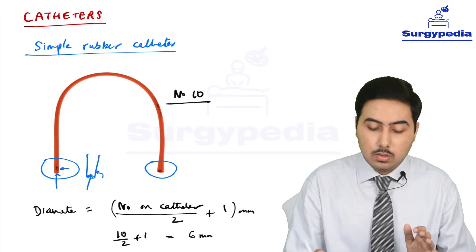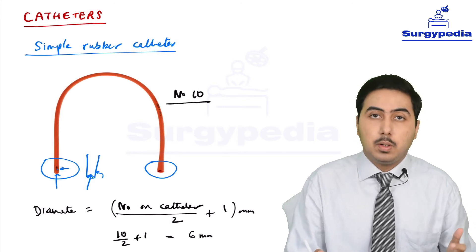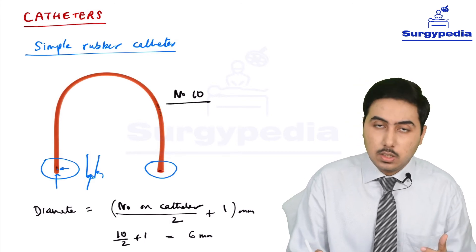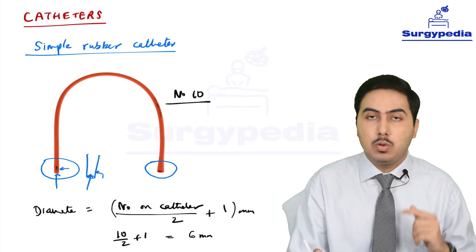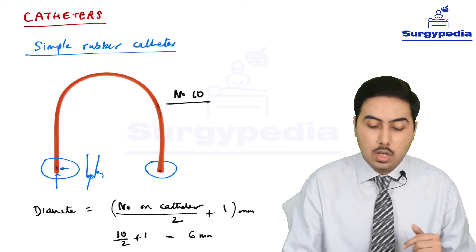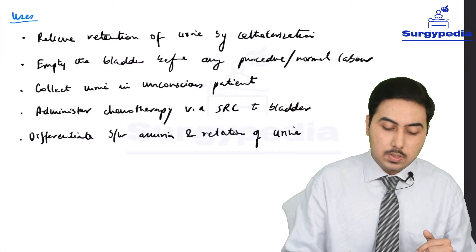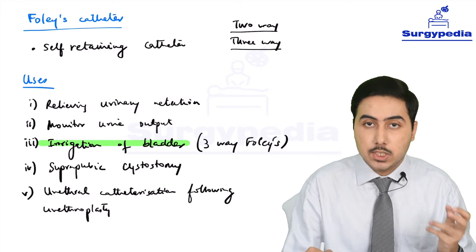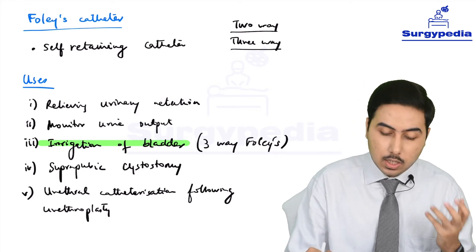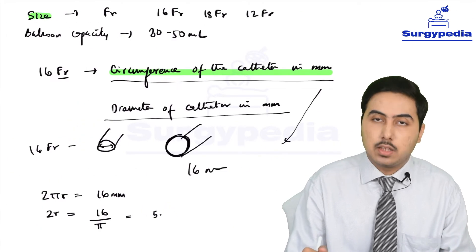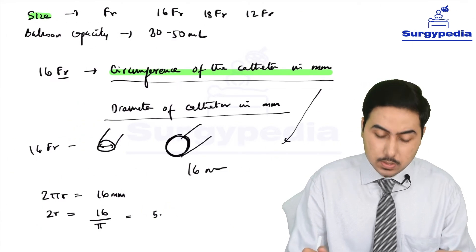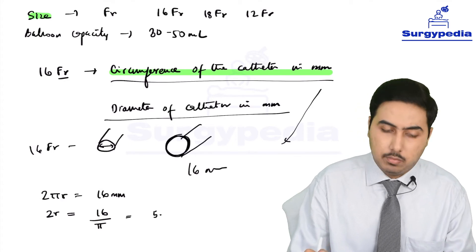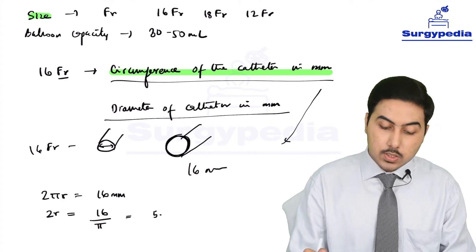The measurements of catheters are quite complicated. To summarize: for the English scale (simple rubber catheter), no FR is written — for example, number 10 — and the diameter equals the number divided by 2 plus 1 mm. For Foley's catheter, FR is written indicating the French scale, and that number represents the circumference of the catheter in millimeters, so you divide by π (3.14) to get the diameter.